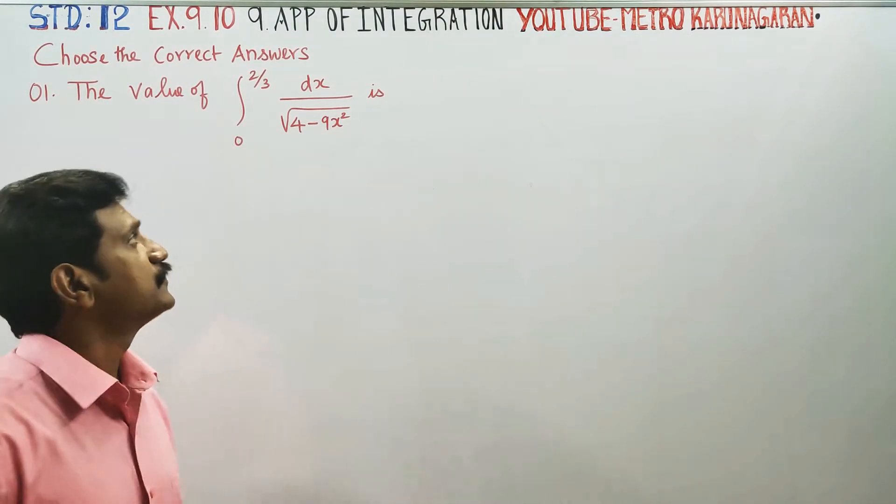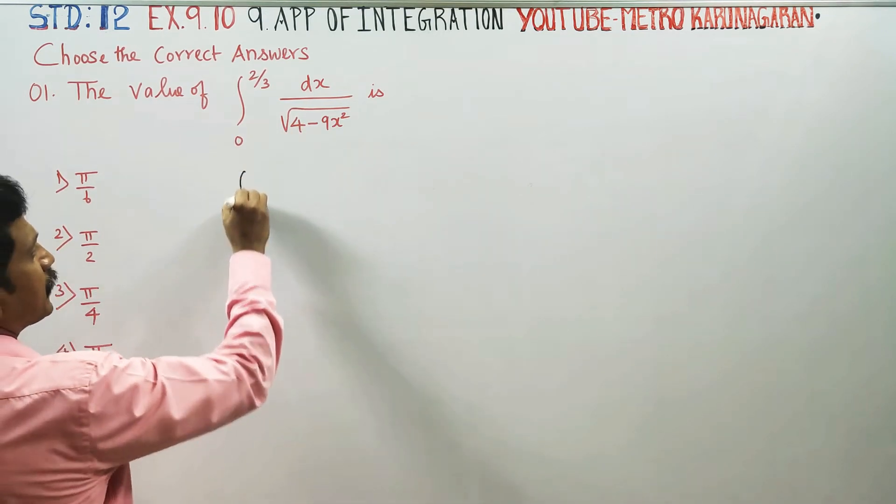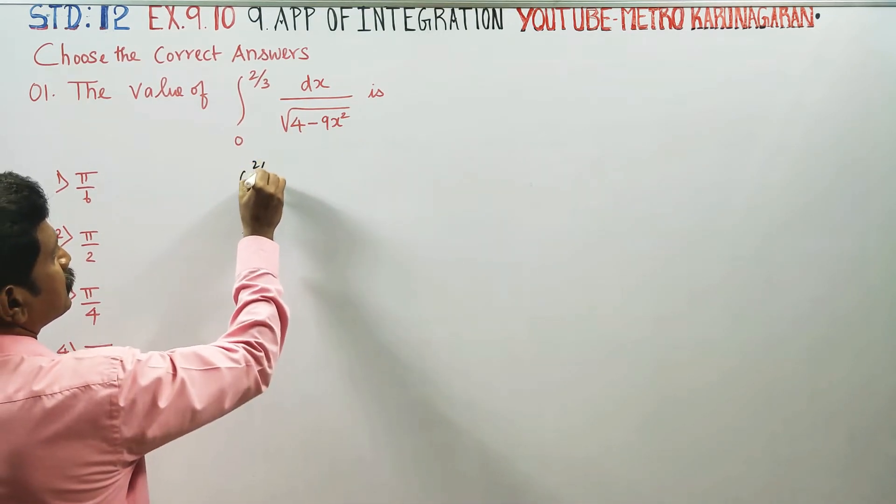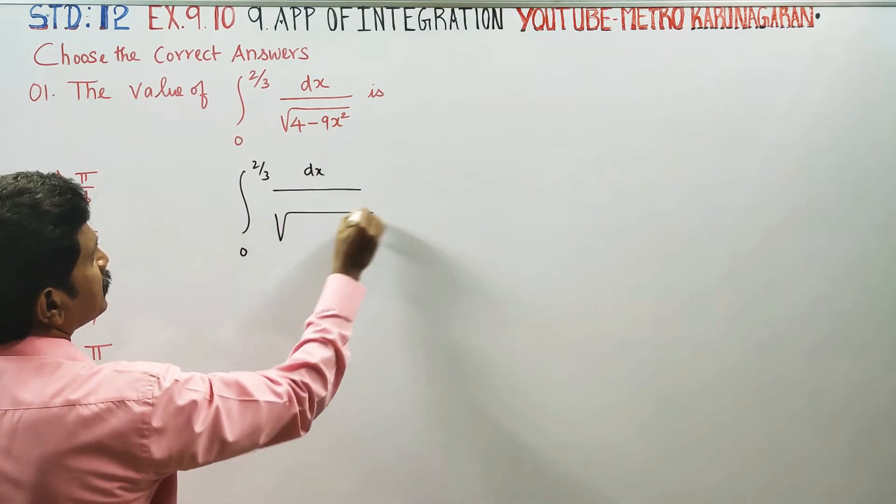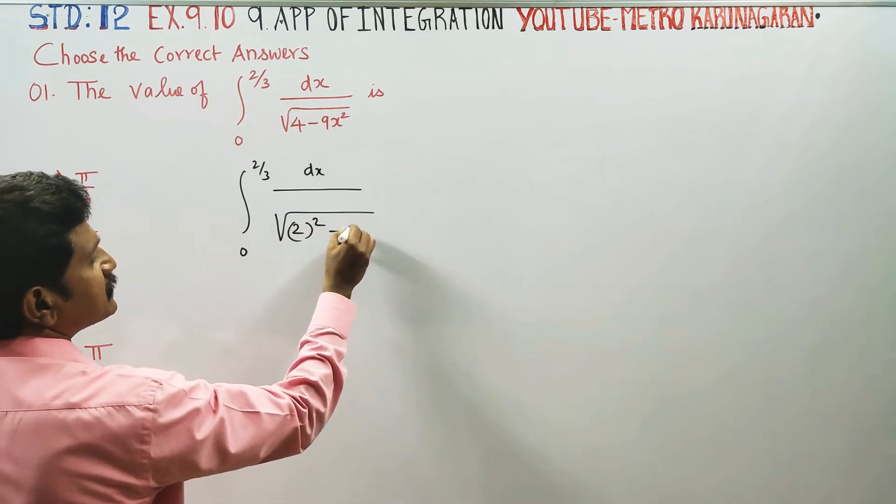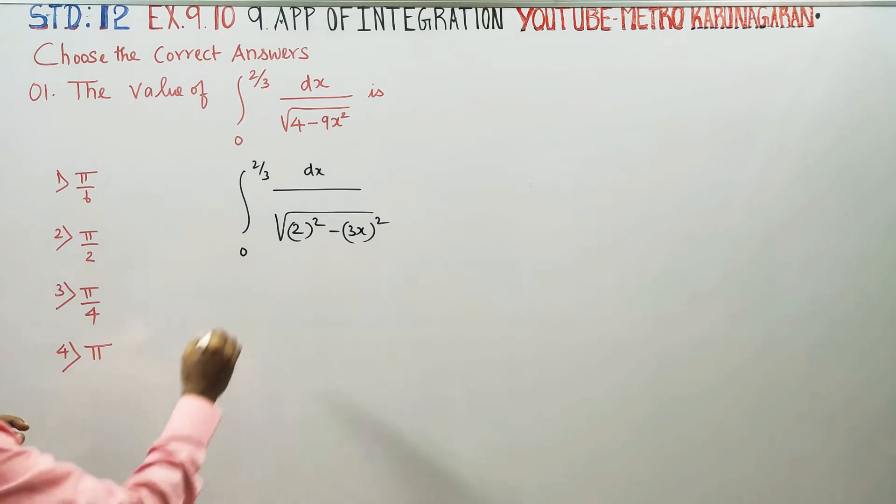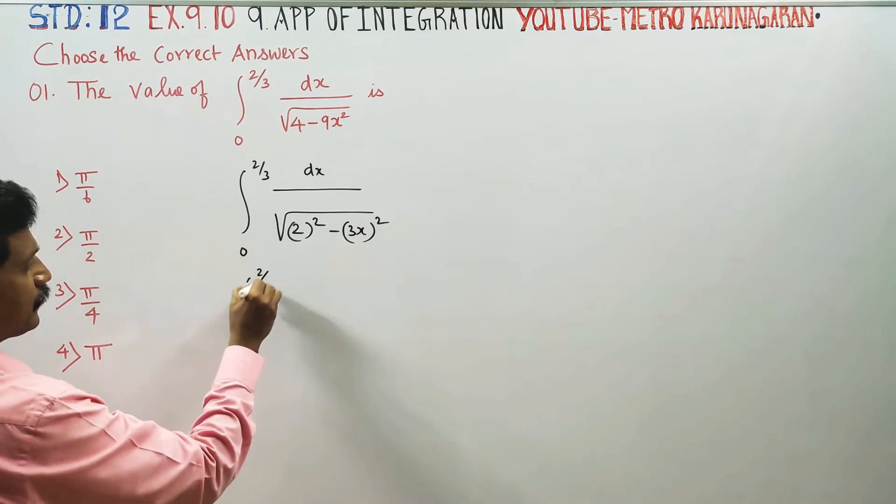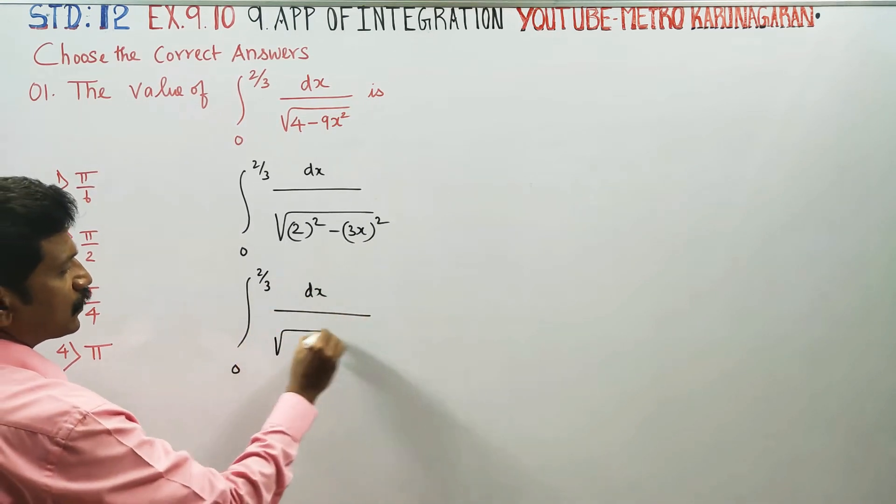find the value of integration from 0 to 2π/3, dx by √(4-3x²). This can be written as 2² minus 3x², 0 to 2/3, dx square root of.